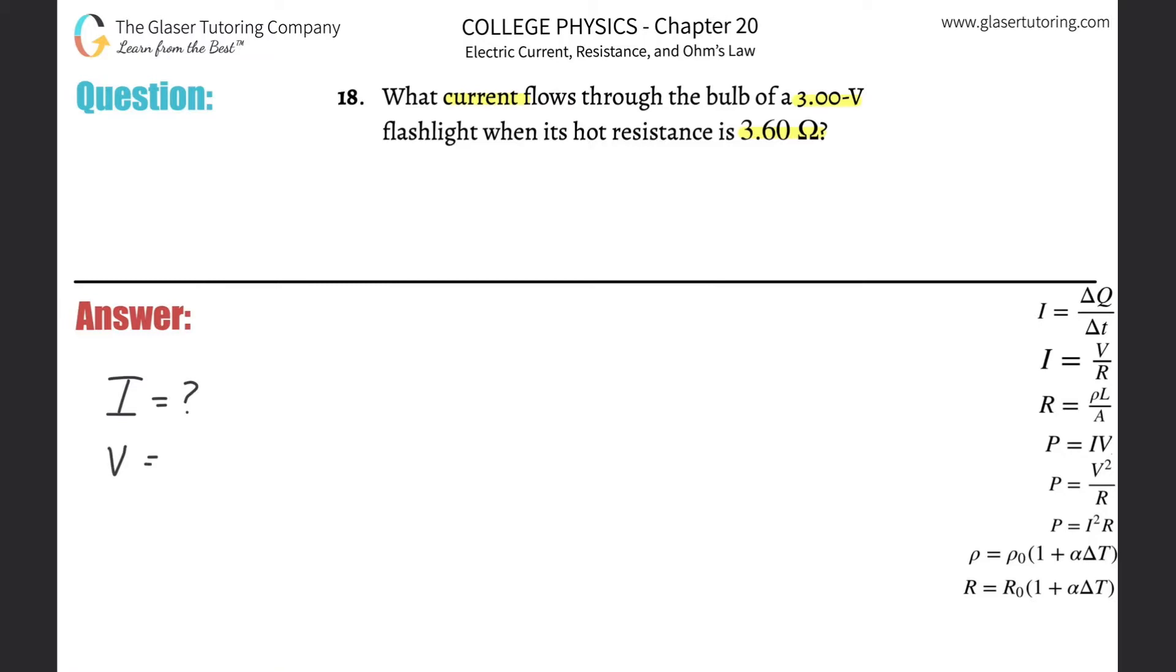We do know the potential difference, aka the voltage. They told us it's going to be 3 volts. They also told us the resistance, which is known as capital R, and that's going to be 3.60, measured in the unit of ohms.